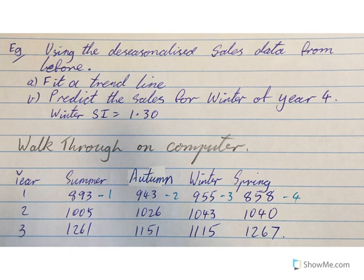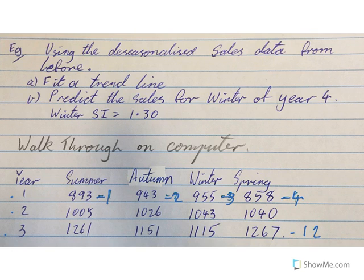This is a good example of where a time code is really handy. We've got four seasons — summer, autumn, winter, spring — repeating three times for the three years. Time code 1 starts here, then 2, 3, and so on, continuing up to time code 12 for spring of year three.